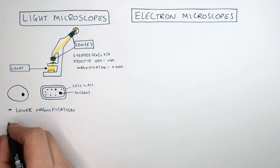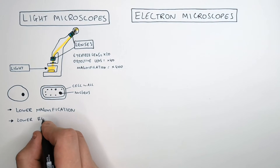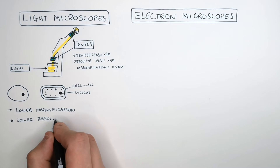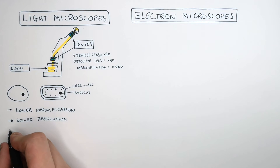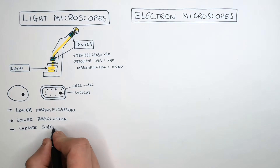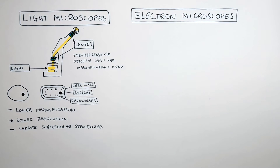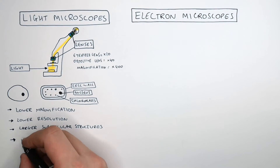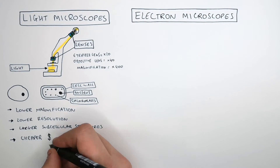Light microscopes have a lower resolution than electron microscopes, meaning you're only able to identify the larger subcellular structures. They are also much cheaper than electron microscopes.